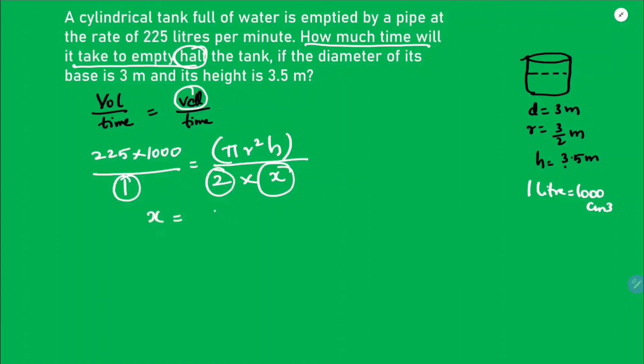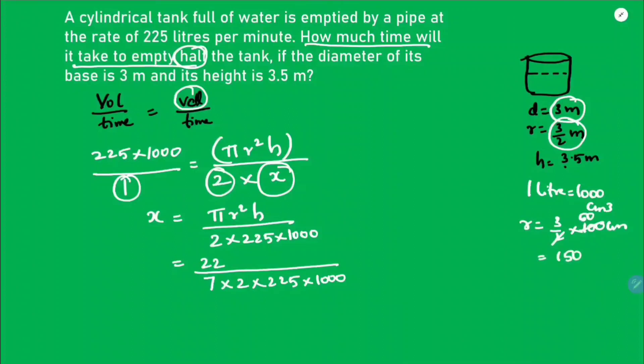If you substitute the values, just cross multiply. So x equals pi r square h by 2 into 225 into 1000. Pi is 22 by 7 into 2 into 225 into 1000. I took the volume in centimeter cube. Diameter is 3 meters, radius is 3 by 2, so 3 by 2 into 100.